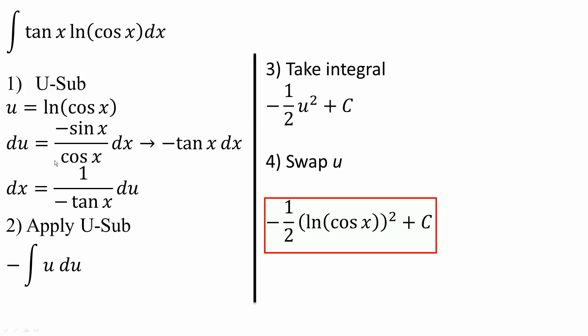From there, I could say that dx is equal to 1 over negative tan x du. Next, I will apply this change. So I see dx, put 1 over negative tan x du. This would cancel out this tan x with this tan x, and so I would get negative the integral of u du,